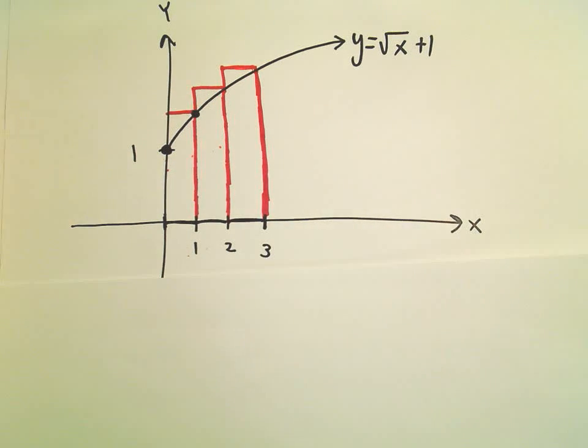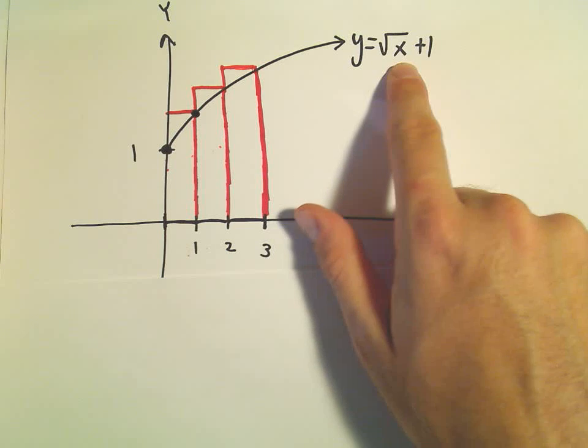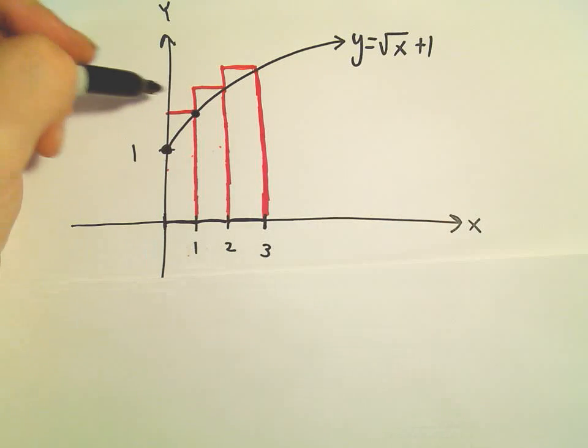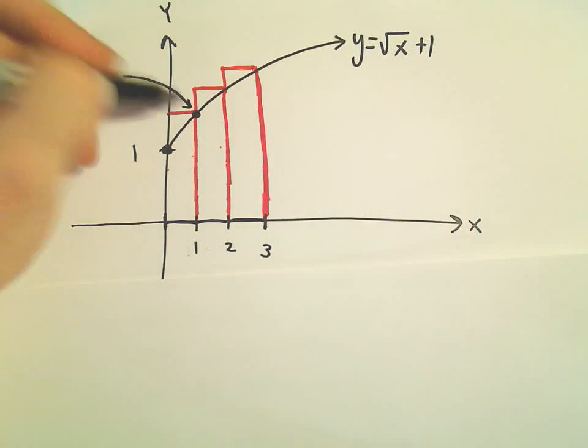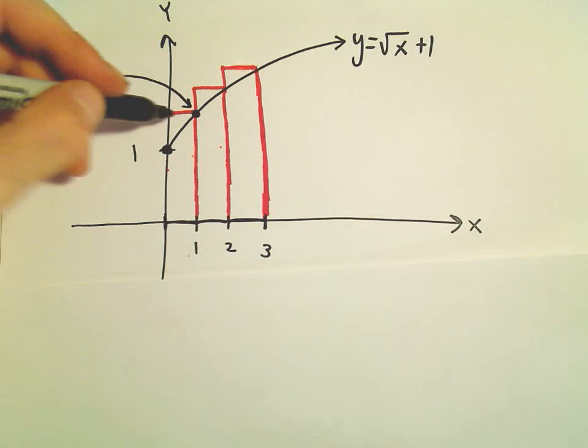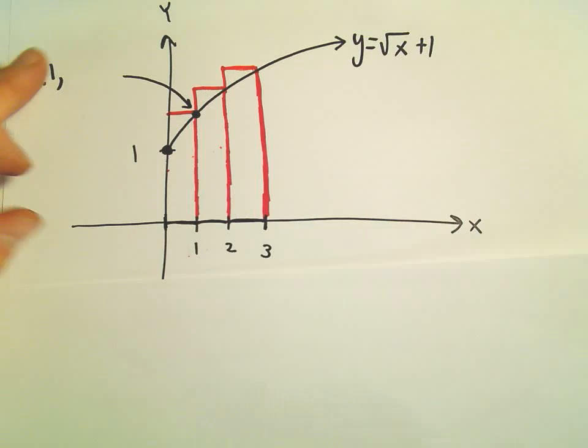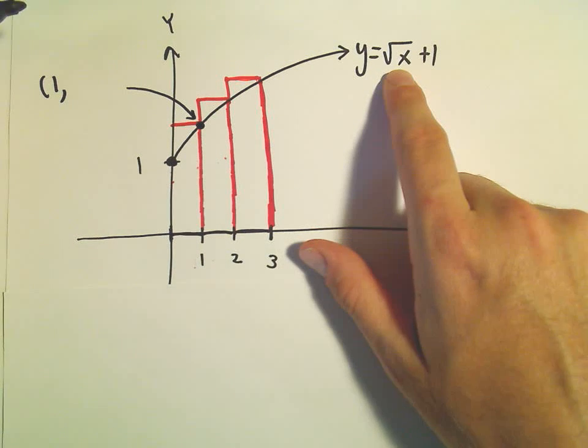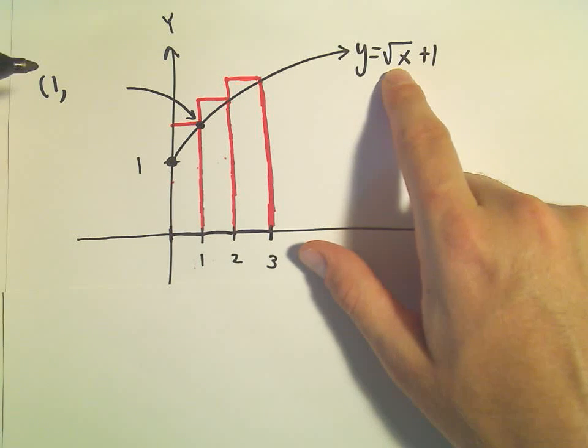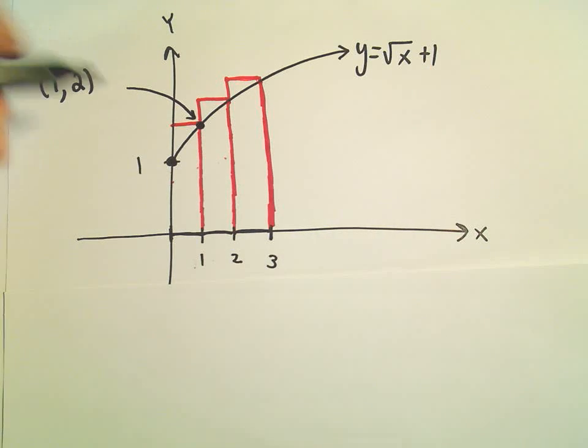The height is changing, but the height is just the y value on the function. This first point, that's the height of the first rectangle. If we plug in x equals 1, we would get the square root of 1 plus 1, we would get the y coordinate of 2.